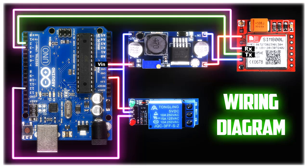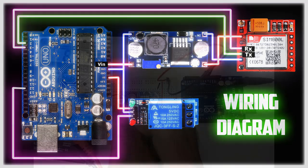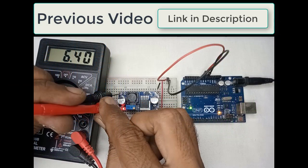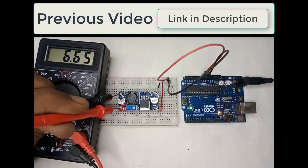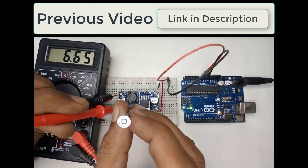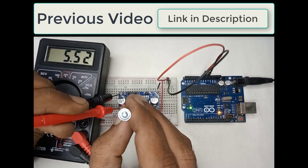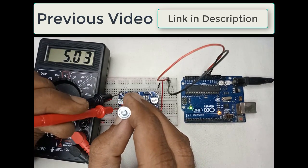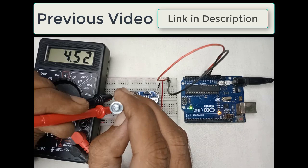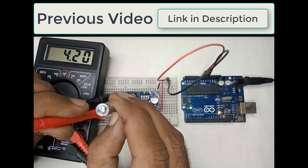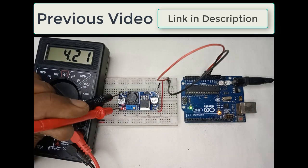Here is the wiring diagram — follow it to connect everything correctly. If you have trouble connecting the hardware, watch my other video where I explain how to connect the SIM800L to Arduino. Let me know if you have any questions; feel free to ask in the comments. Bye.